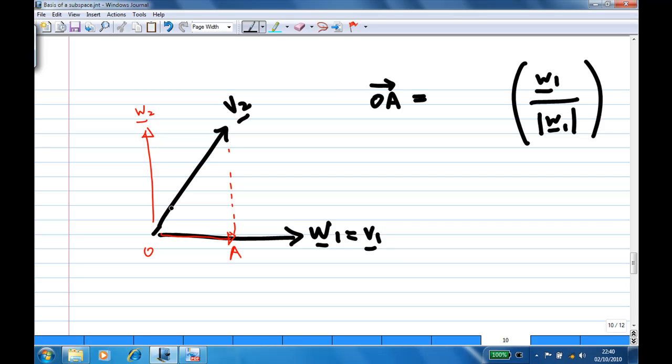The length of OA, you can find that, let's say that this angle is theta here. The length of OA is just the length of v2 multiplied by cosine theta, where theta is the angle between v2 and v1. I'm going to multiply by the length of w1 and then divide by the length of w1.